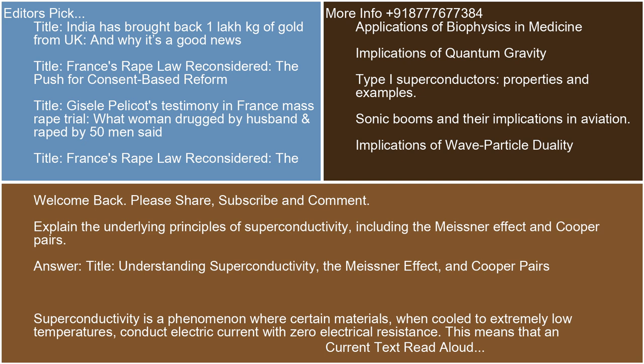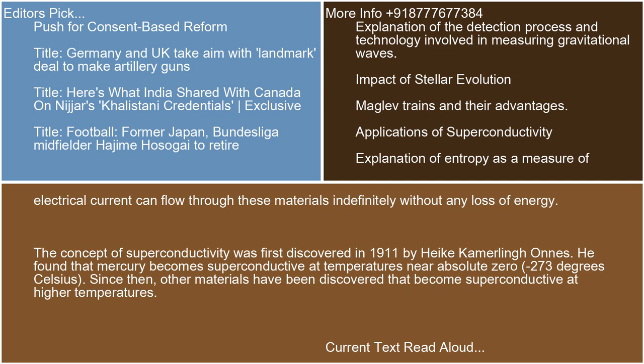Understanding superconductivity, the Meissner effect, and Cooper Pairs. Superconductivity is a phenomenon where certain materials, when cooled to extremely low temperatures, conduct electric current with zero electrical resistance. The concept of superconductivity was first discovered in 1911 by Heike Kamerlingh Onnes. He found that mercury becomes superconductive at temperatures near absolute zero, minus 273 degrees Celsius.